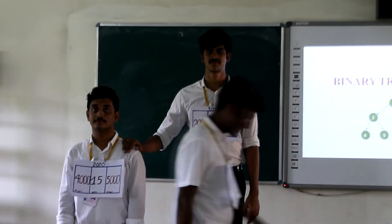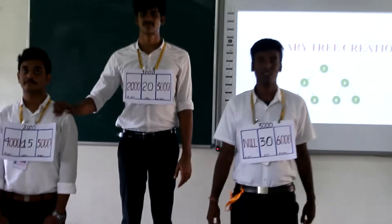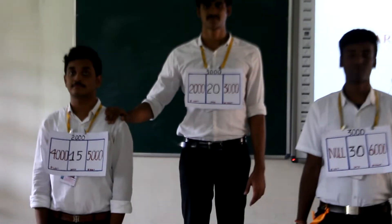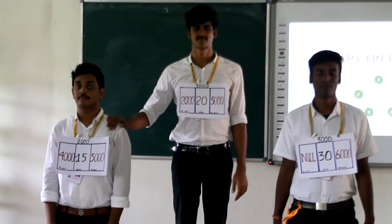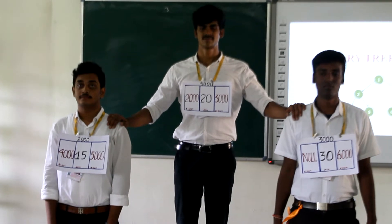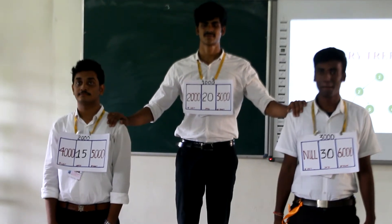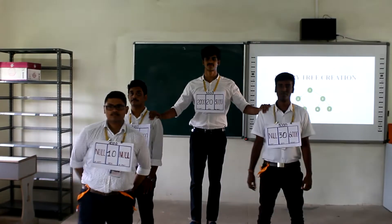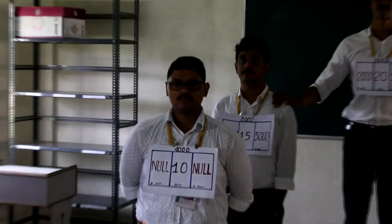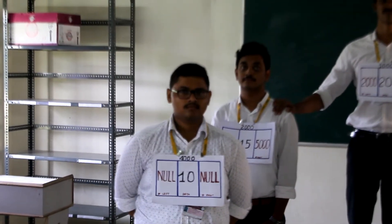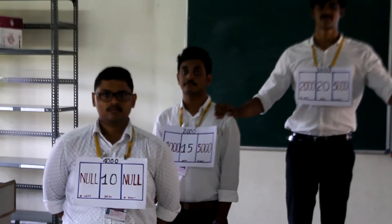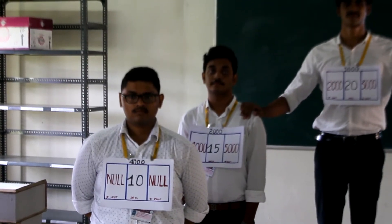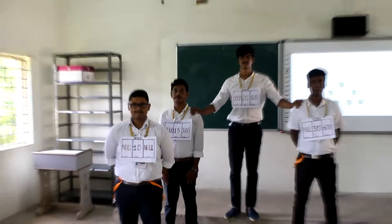Enter the next element 30. The element 30 is greater compared to the root node 20, so it is placed on the right side of root and the right pointer of the root node points to element 30. Now enter the next element 10. The element 10 is smaller compared to root node 20 and smaller than element 15, so it is placed on the left side of element 15 and the left pointer of element 15 points to element 10.